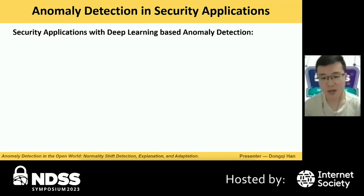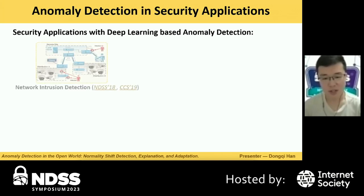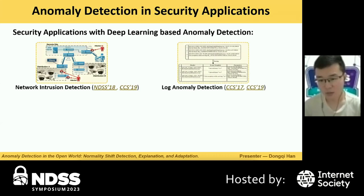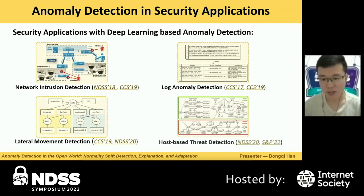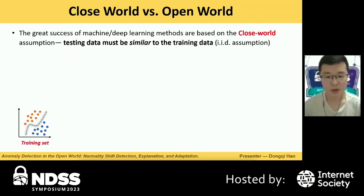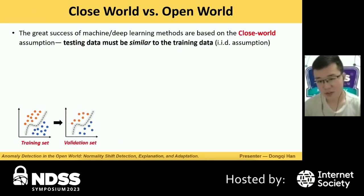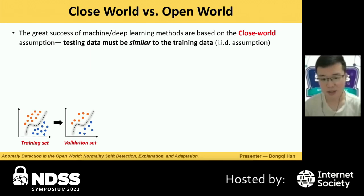So far, researchers have developed deep learning-based anomaly detection for several security applications, such as network intrusion detection, log anomaly detection, lateral movement detection, and host-based threat detection. Unfortunately, the great success of machine learning and deep learning methods is based on the closed world assumption, which requires testing data to be similar to training data, known as the IID assumption.